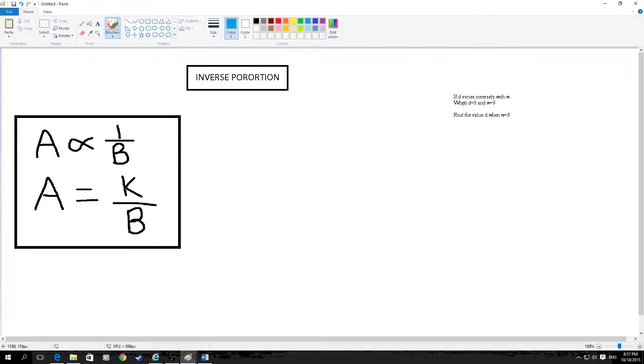So the question is, if d varies inversely with w. When d is 3 and w is 9, find the value of d when w is 3. So it's the same thing, d, so we do this.